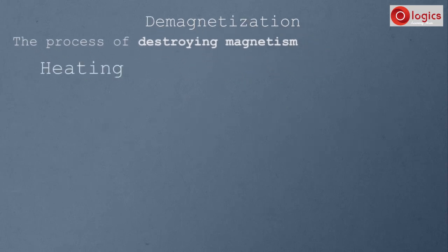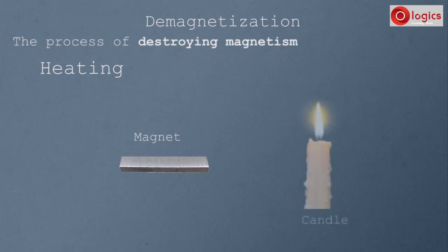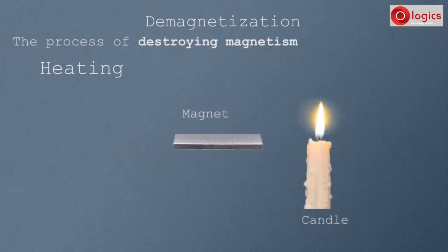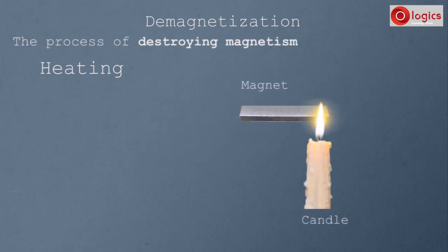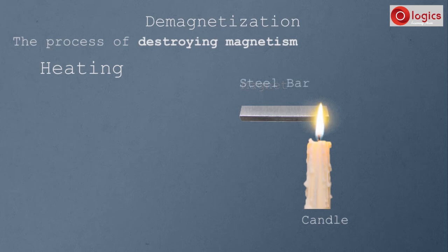Heating. This is a magnet and this is a candle. Heat the magnet with this candle. Observe after some time — the magnet loses its magnetism and becomes a steel bar.